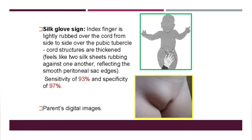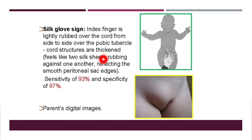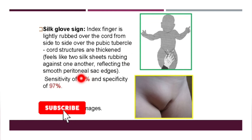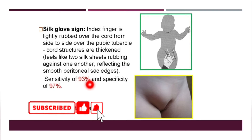The next test is called the silk glove sign. The index finger is slightly rubbed over the cord from side to side over the pubic tubercle. The cord structures are thickened and feel like two silk sheets rubbing against one another, reflecting the smooth peritoneal sac edges. This test has a sensitivity of 93% and specificity of 97%.